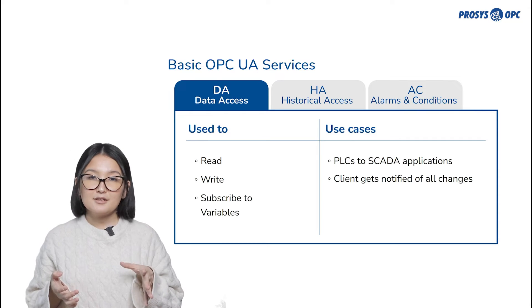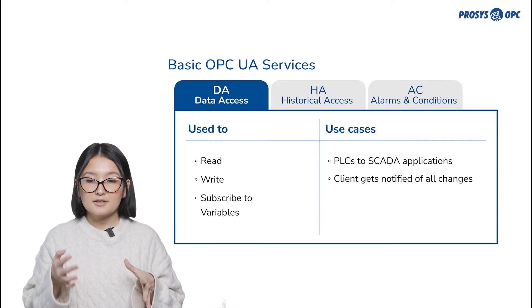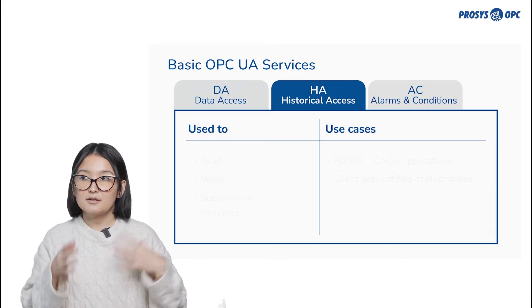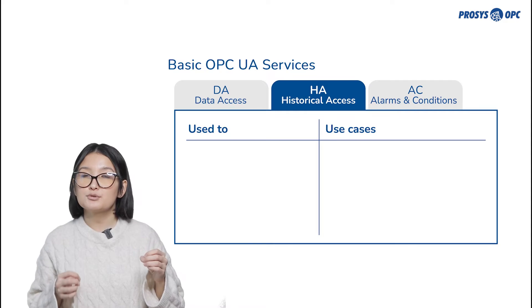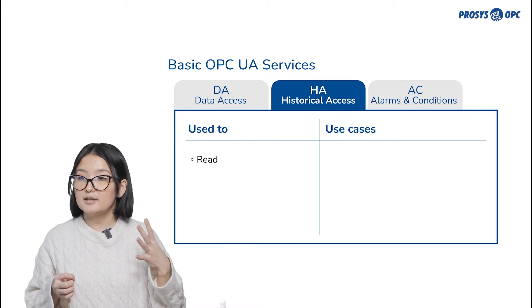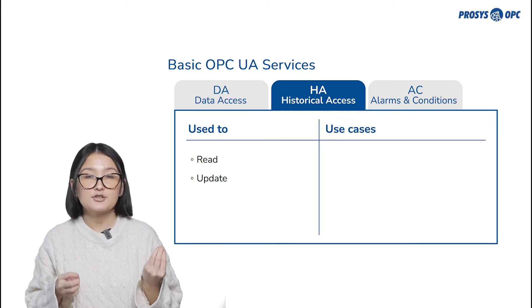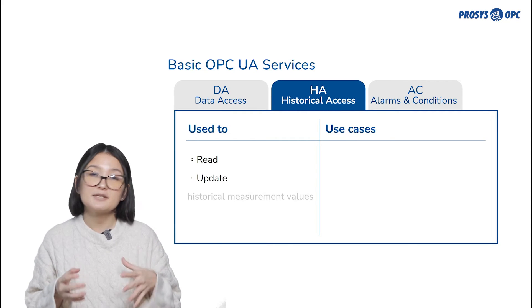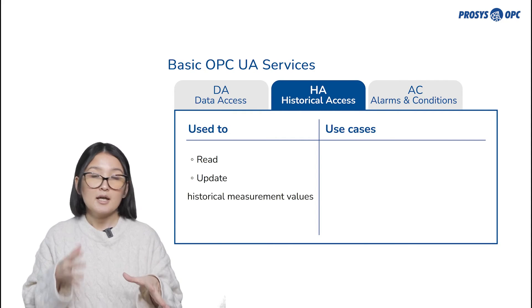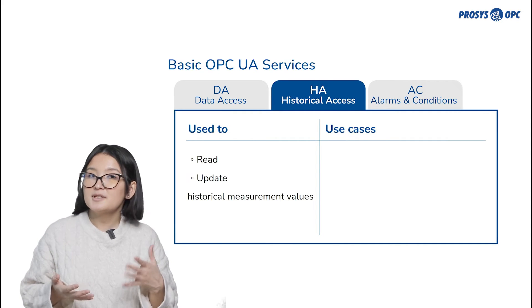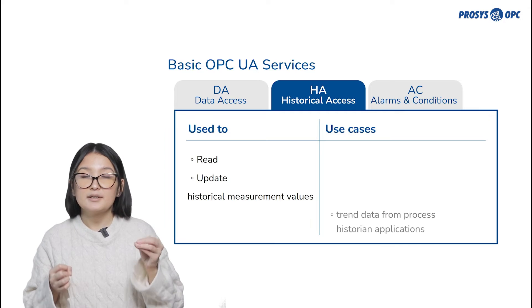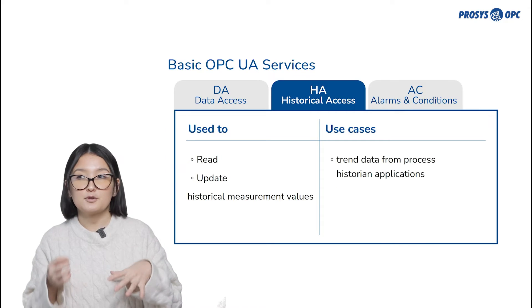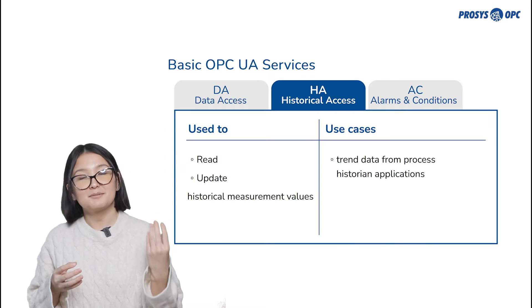The second model is Historical Access, or HA. This one is used to read and update historical data for a particular measurement, and the most common use case is to read trend data from process historian applications.